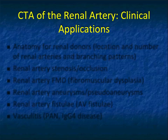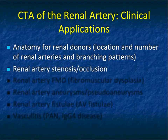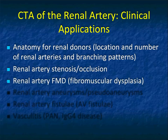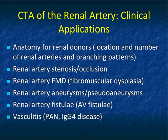When you think about the renal arteries with CT angiography, there are many applications. One of the most common is anatomy for renal donors — the number of renal arteries, their location, and their branching patterns. We also look for stenosis or occlusion, fibromuscular dysplasia, which is a very common diagnosis at Hopkins with lots of referrals, as well as renal artery aneurysms, pseudoaneurysms, fistulae, and vasculitis.